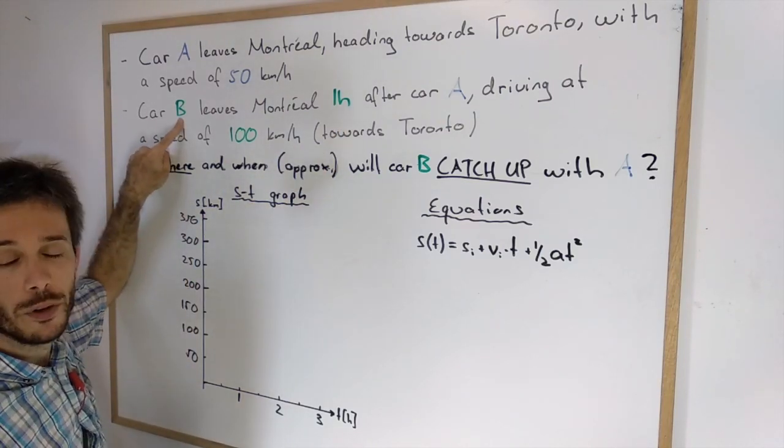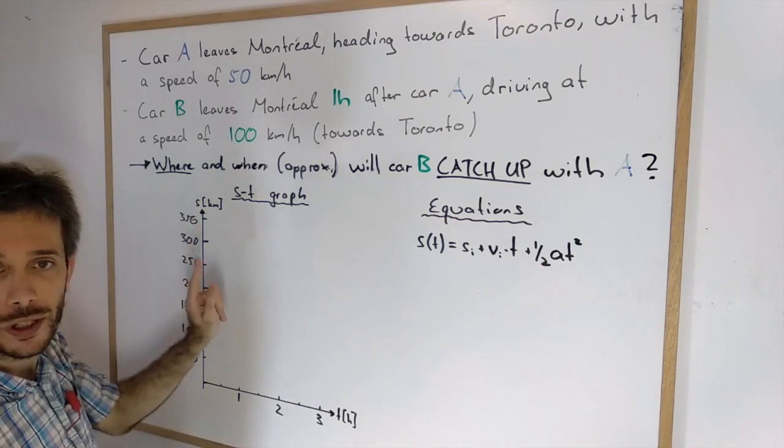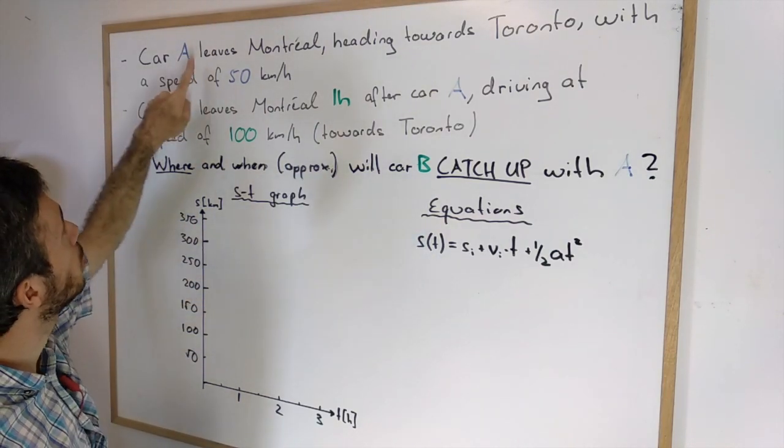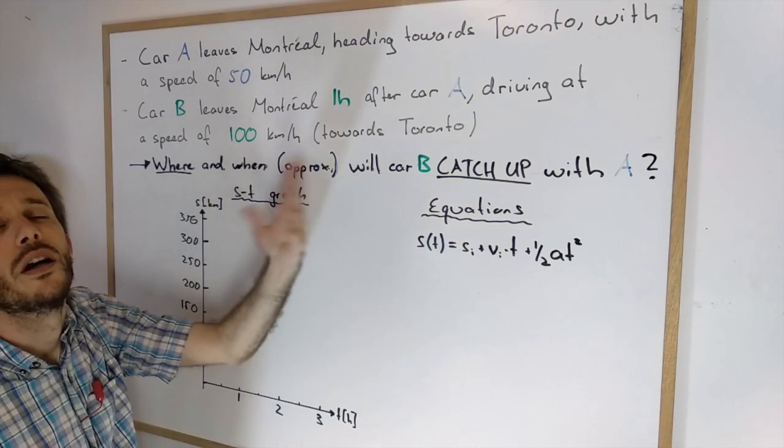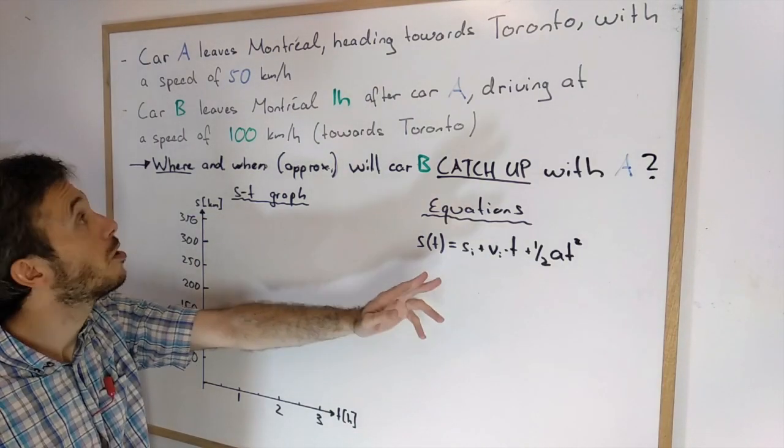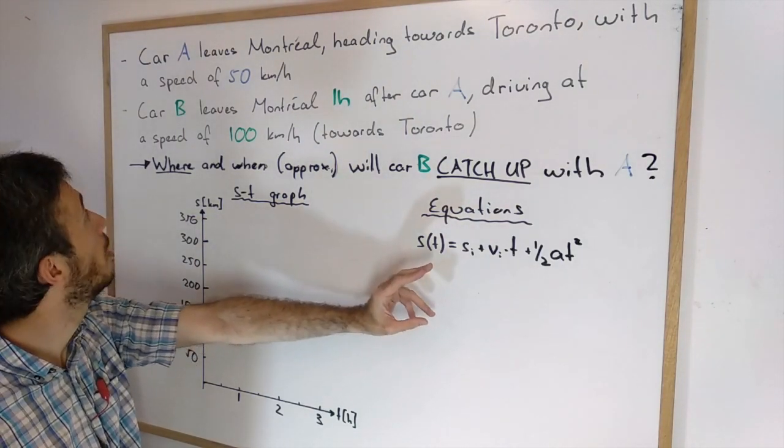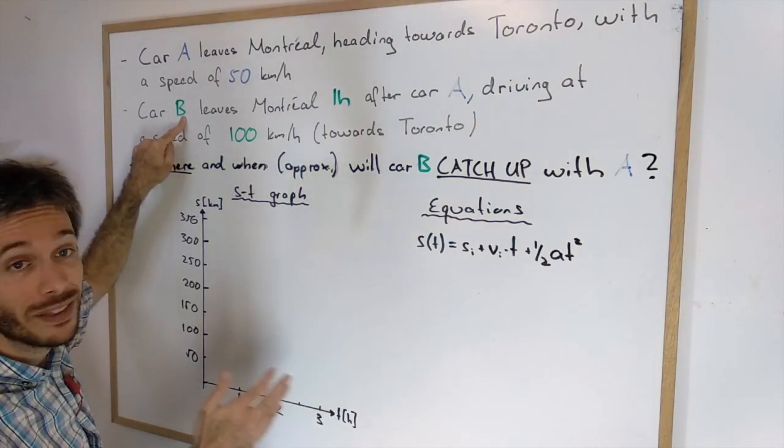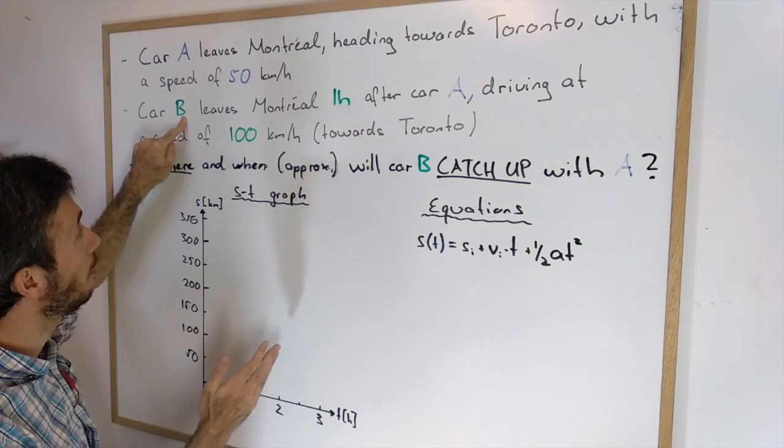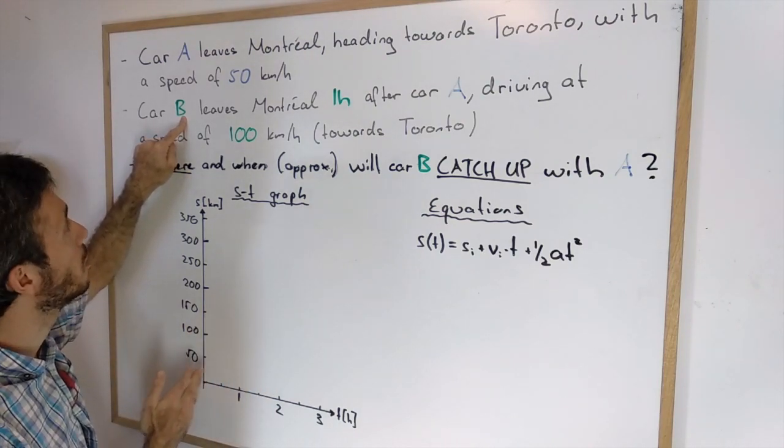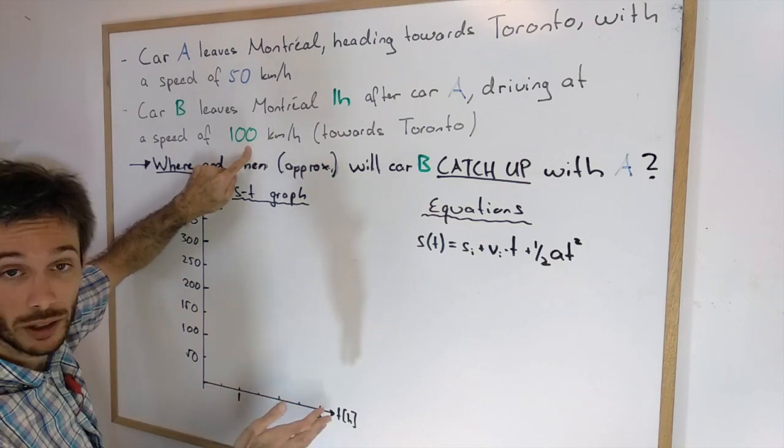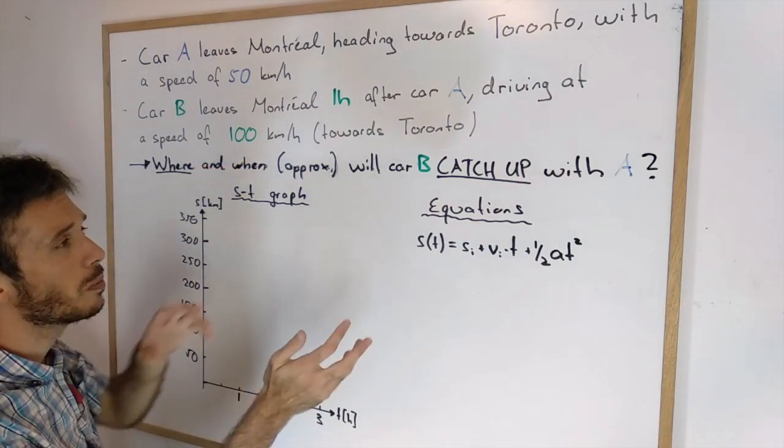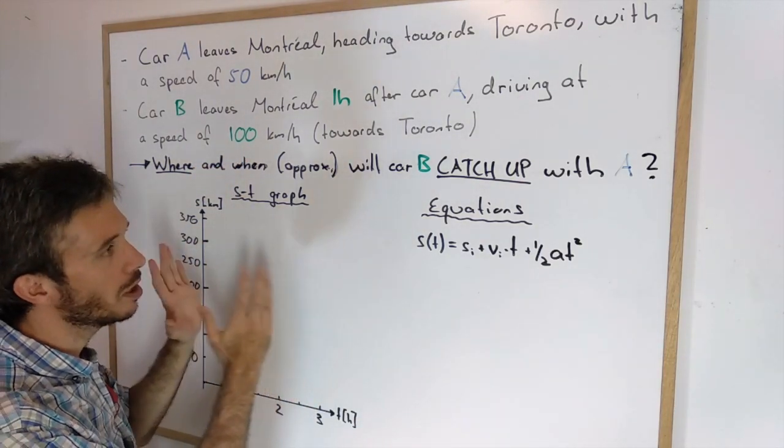The advantage of using B is that you can do it with graphs and equations. If you were to choose A, the equations for constant acceleration will not work because B will not have constant acceleration for the entire time. B will have zero velocity, then a huge peak of acceleration, then suddenly 100 km an hour.